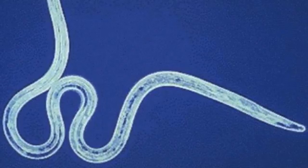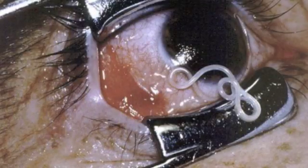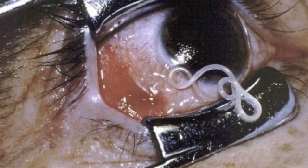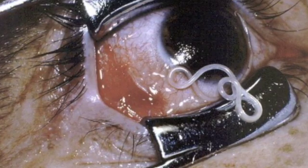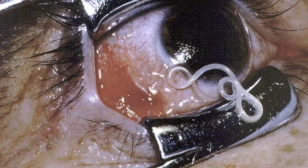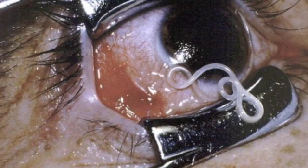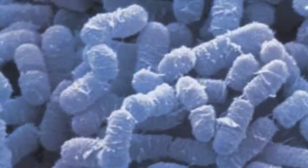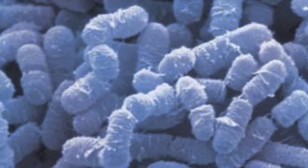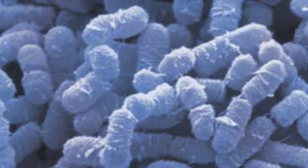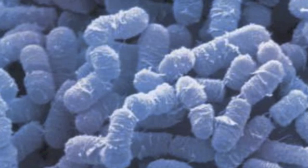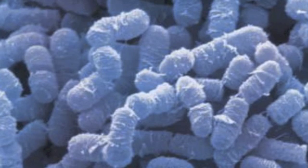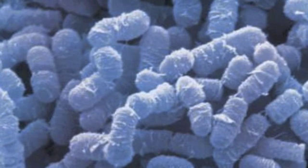Number 10: Loa loa, also known as the eye-infesting worm. It penetrates the body through the bite of a deer fly. The worms wander under the skin, staying in the bloodstream during the day and infesting the lungs during the night. Number 9: Clostridium perfringens. This nasty parasite causes the condition called gas gangrene, which literally melts your flesh into fluid and can kill you within 12 hours.